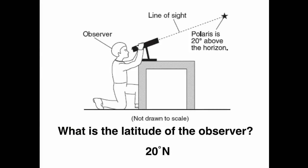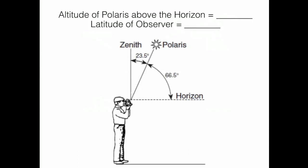Let's take a look at another example. So here's an observer looking at Polaris. And Polaris has an altitude of 66 and a half degrees.